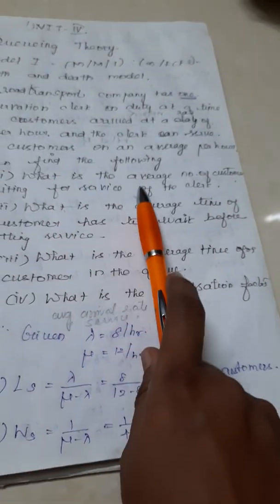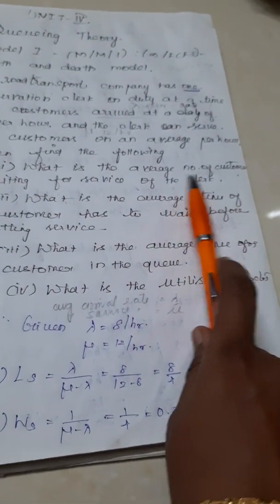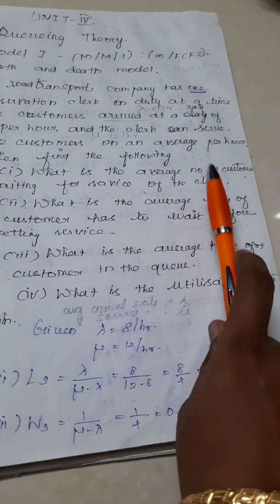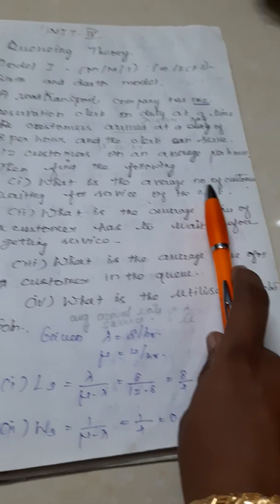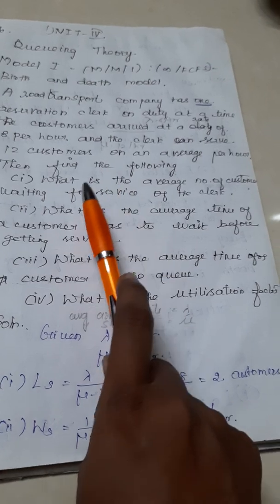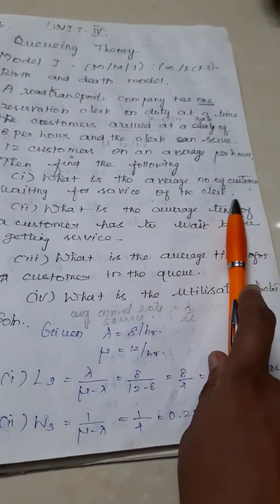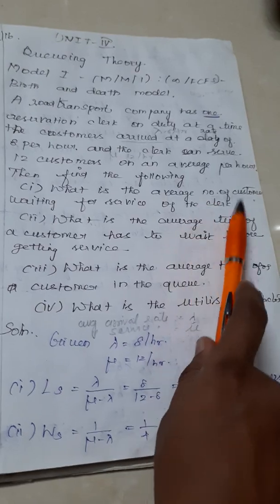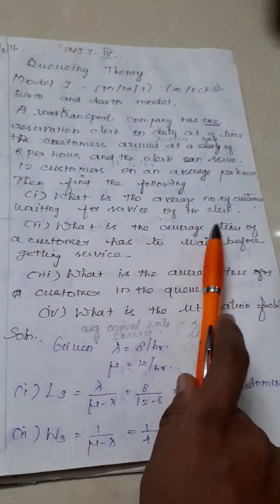The first measure they say average number of customers. Whenever number of customers is stated, it is about length. So length can be asked either for customers in the queue or customers in the system.